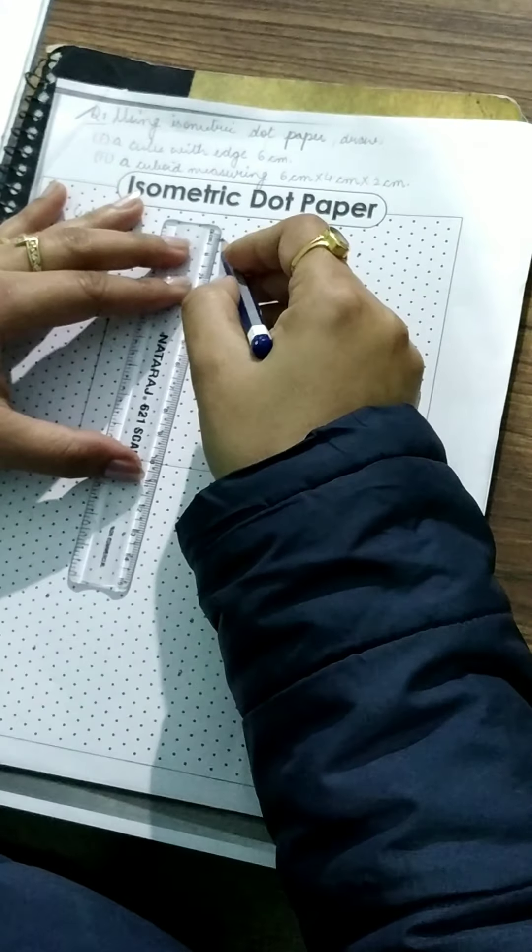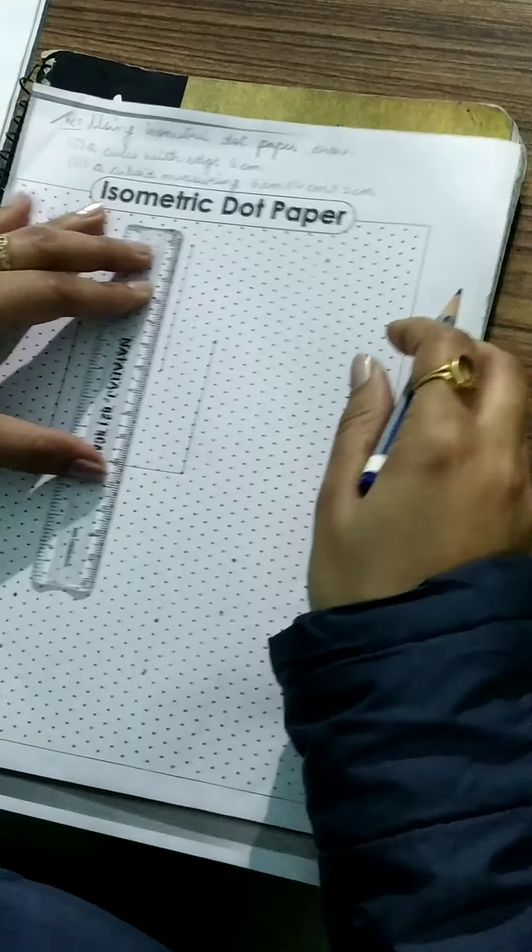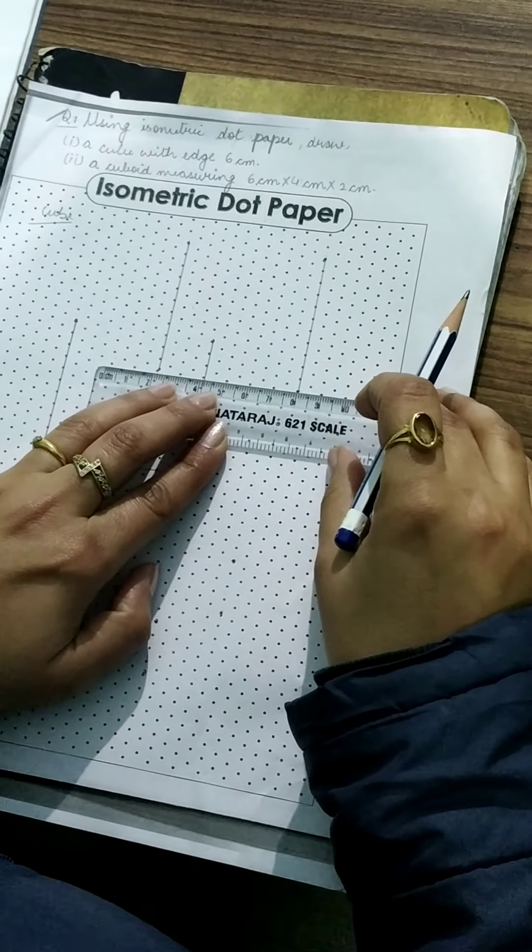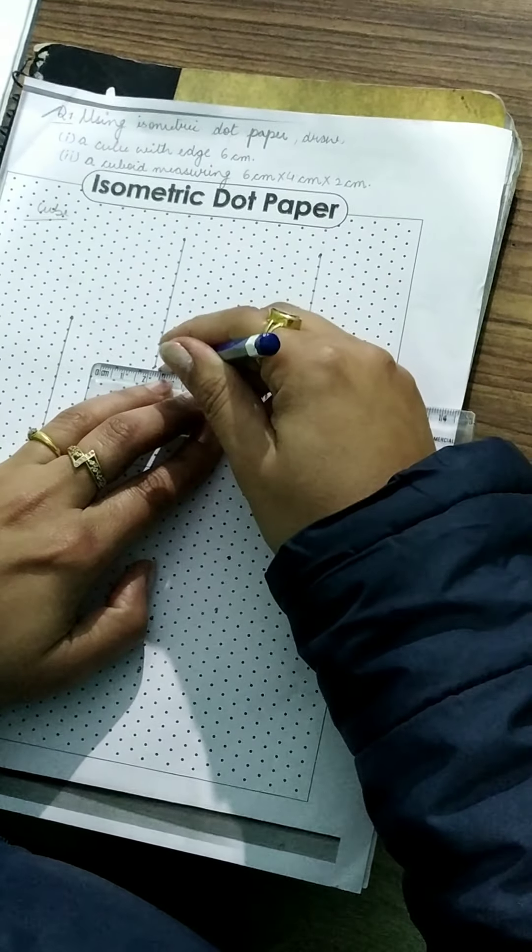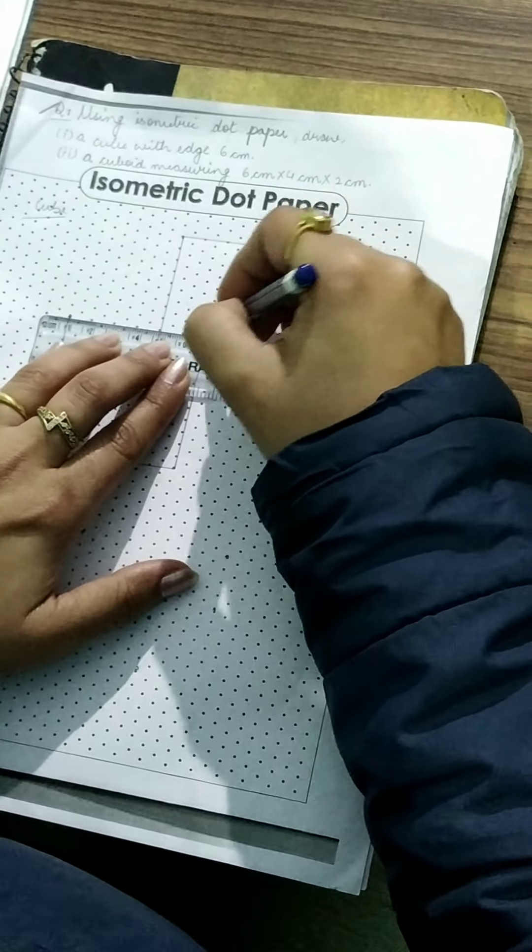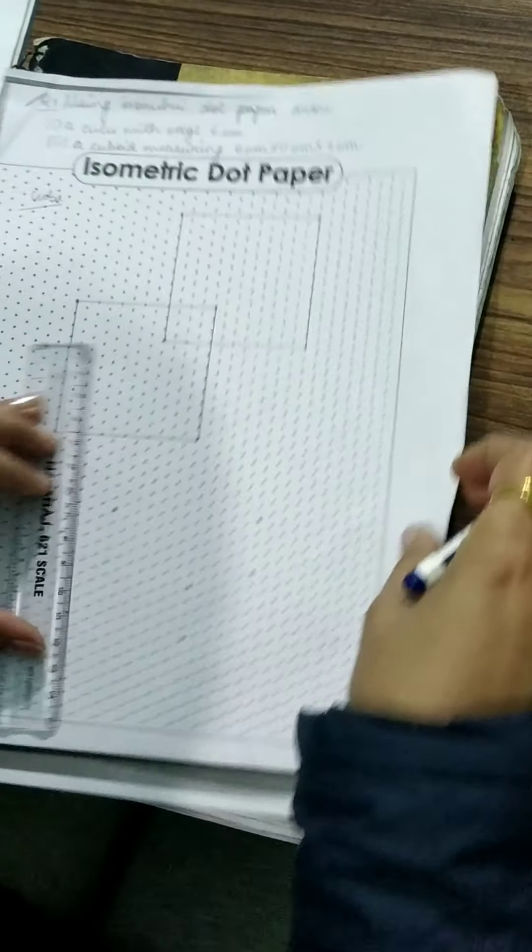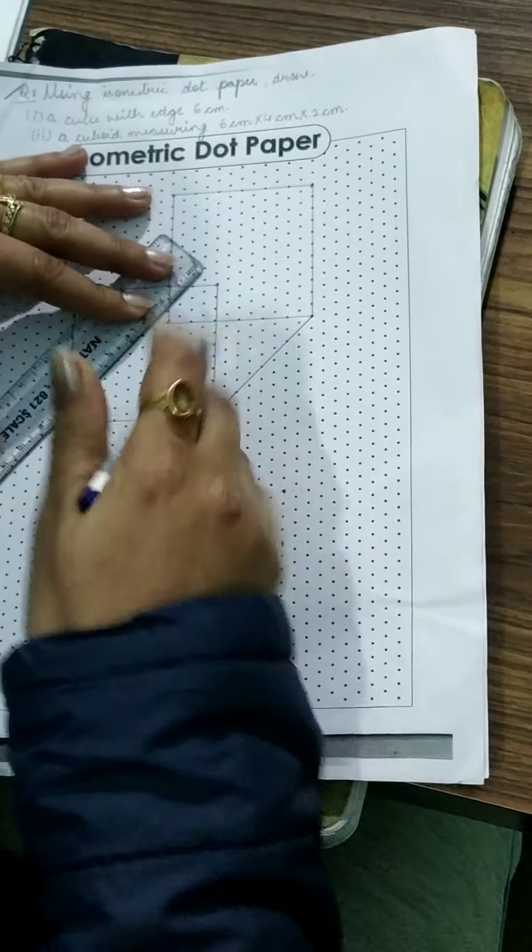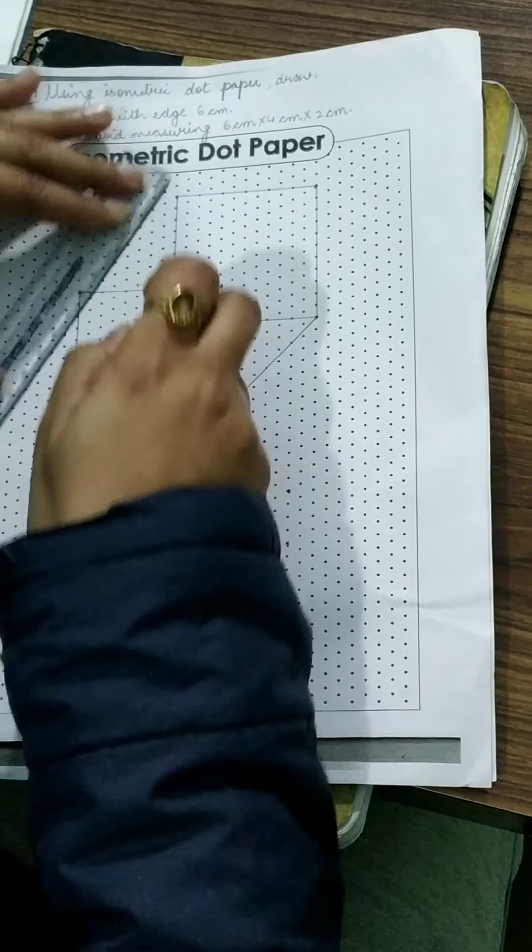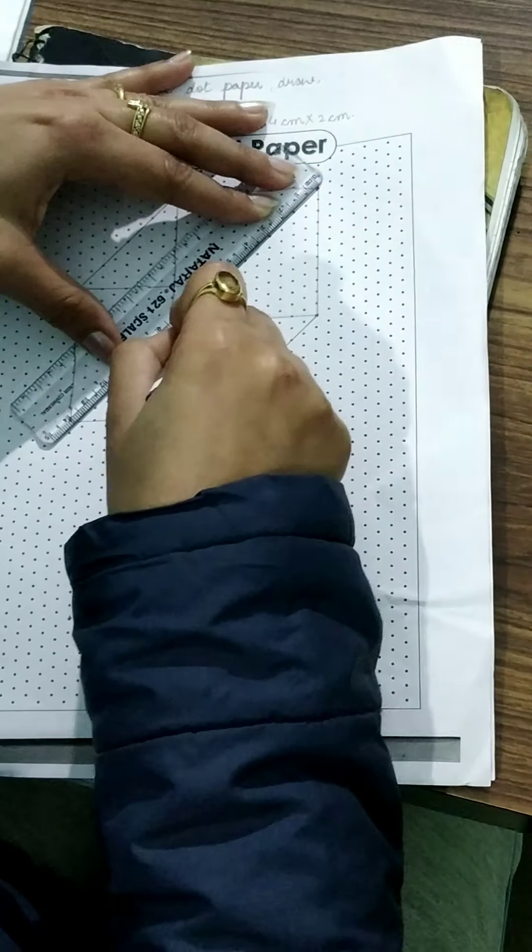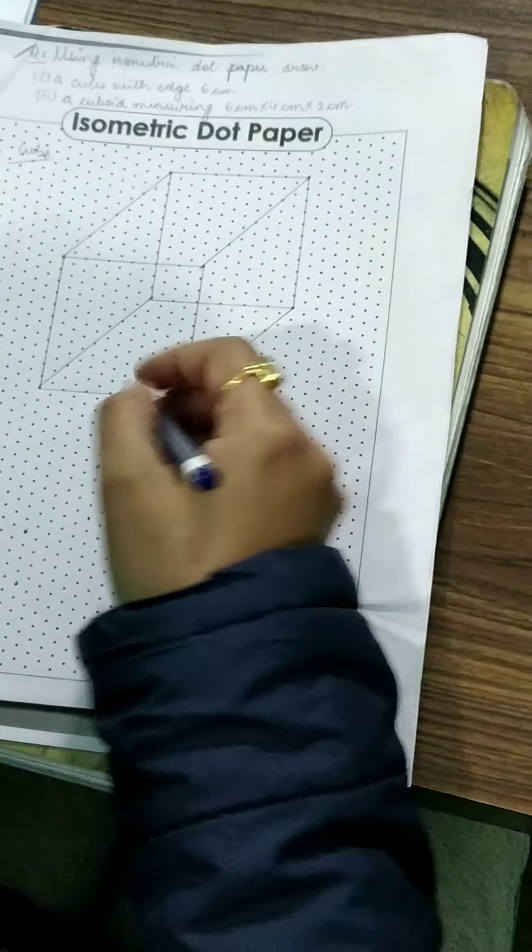Then another square we will draw. 2 squares we will draw and we will join them diagonally. This also it is a square so these are the 2 squares I have drawn. Now join them like this we have to join the 2 squares. So it is a cube children of each side how much? 6 cm.